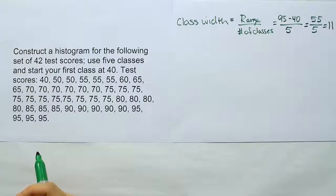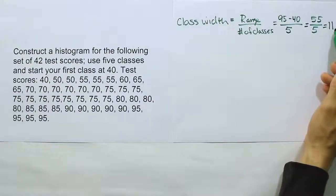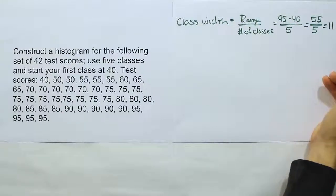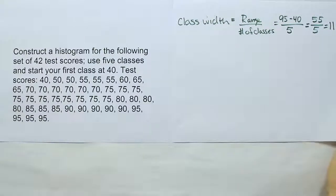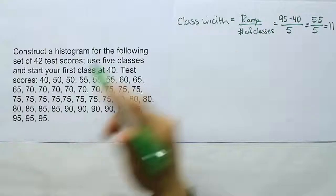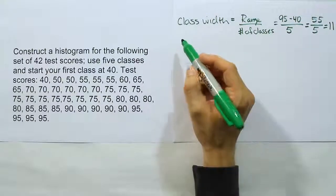So the value for our class width is 11, or at least that's what it seems like. The only problem with that number is that if you test it, it's probably not going to work. Whenever this turns out to be a whole number, it usually does not work. It usually means that our last value will fall outside of the last category. So usually we have to add a little space. Let me just show you that 11 doesn't work though. I'm going to actually use 11 to construct five categories, and you'll see that 95 probably won't fit into the last category.